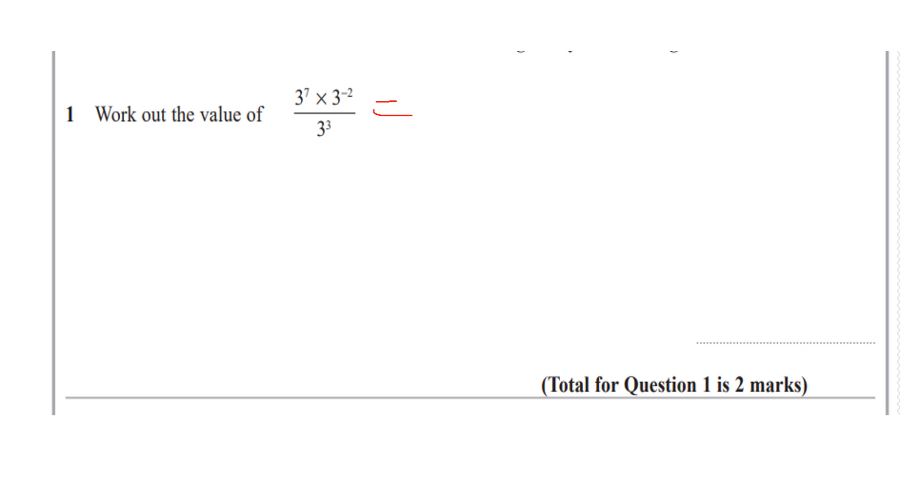Question number one, work out the value of 3 to the power 7 times 3 to the power minus 2 all over 3 cubed. So step one, deal with the numerator first. When I multiply with the same base, I'm going to add the powers.